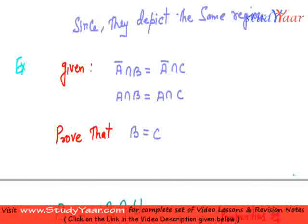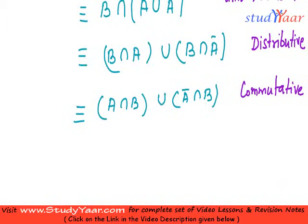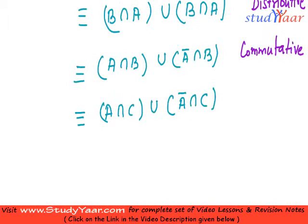Next, I am going to use what is given to me. It is given that complement of a intersection b is equal to complement of a intersection c, and the other result as well. So this is equivalent to a intersection c, union complement of a intersection c. There is no problem here as well, because this was given to me.